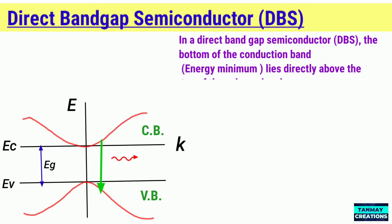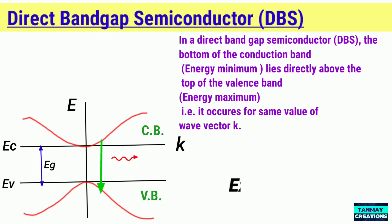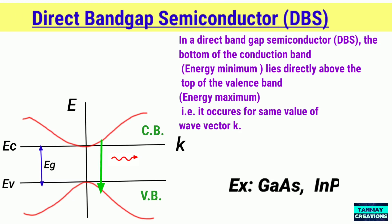In a direct band gap semiconductor, the top of the valence band and the bottom of the conduction band occur at the same value of wave number K, as indicated in the diagram. Examples of direct band gap semiconductors are gallium arsenide and indium phosphide.